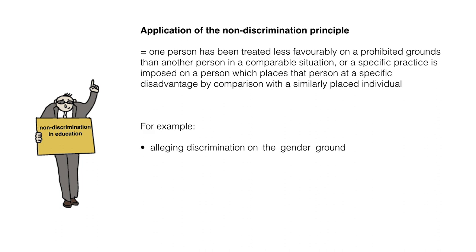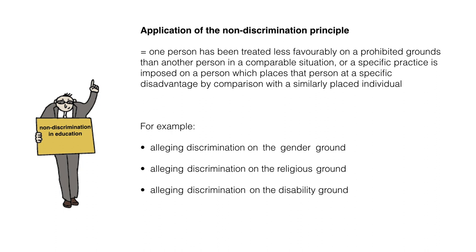Some examples. When alleging gender discrimination, the comparison must be between a man and a woman in similar situations. When alleging religious discrimination, the comparison must be between an individual with a religious belief and one who does not have such a belief, or holds a different religious belief or religious background. When claiming disability discrimination, the comparison must be between an individual with a disability and another without such disability, or an individual with a different disability.